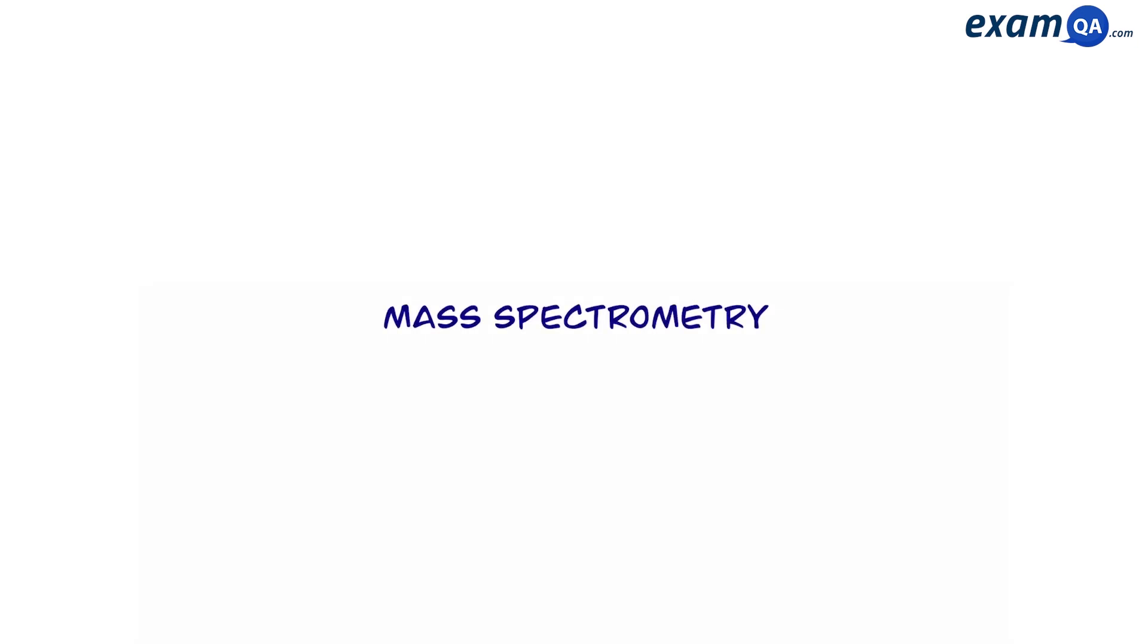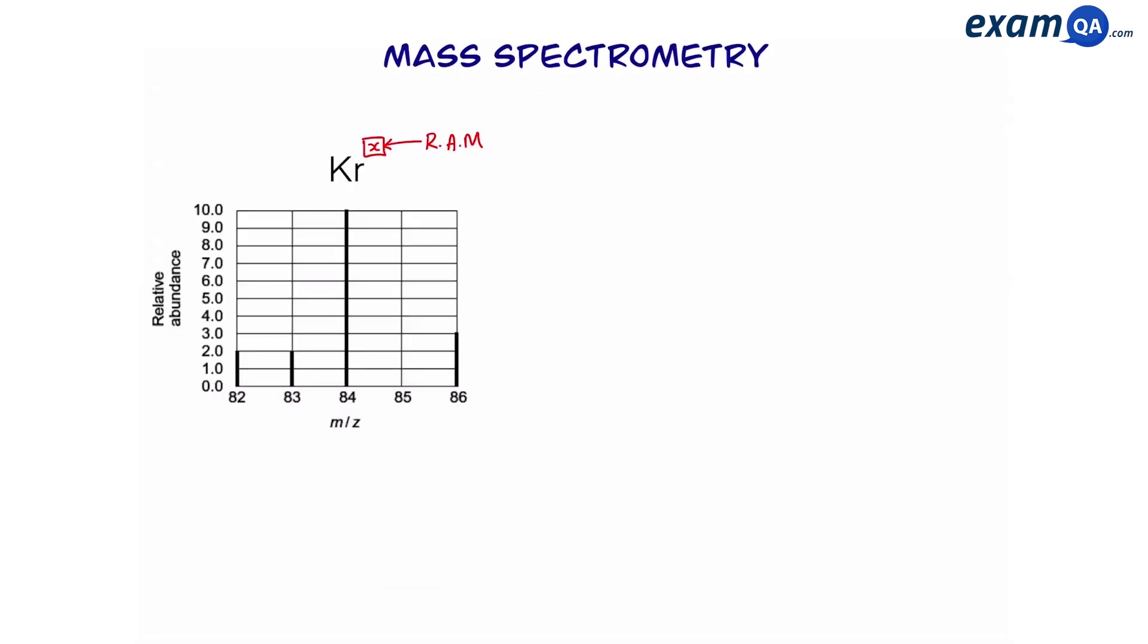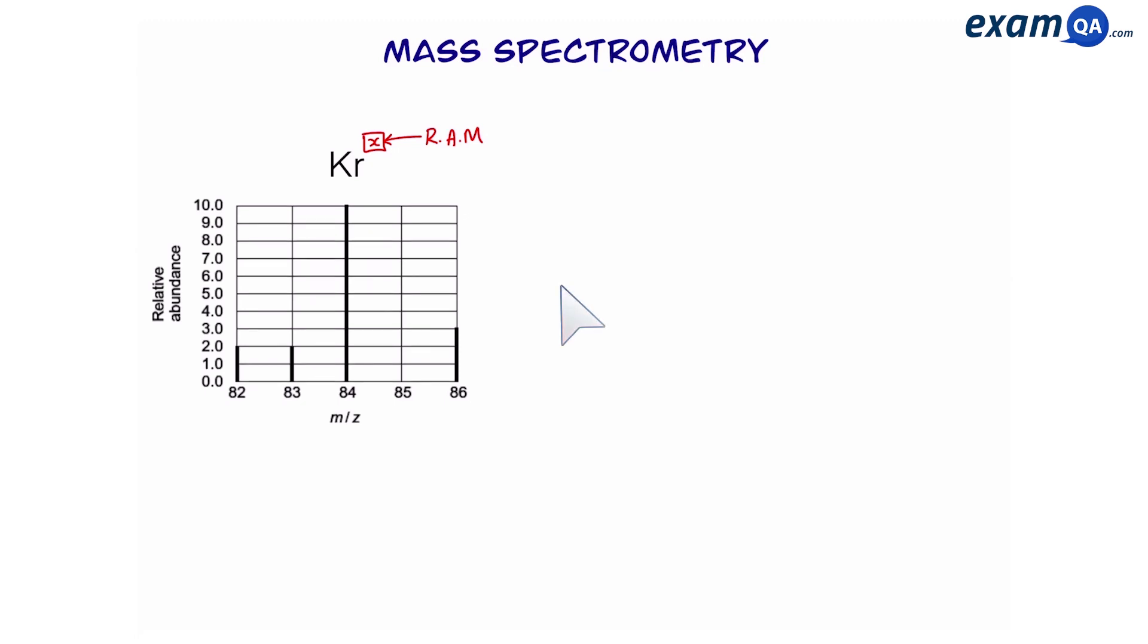Welcome, in this video we're going to be continuing to look at mass spec. Previously, we learned that one use of mass spec is to work out the relative atomic mass of an element, given its isotopes and their relative abundances.